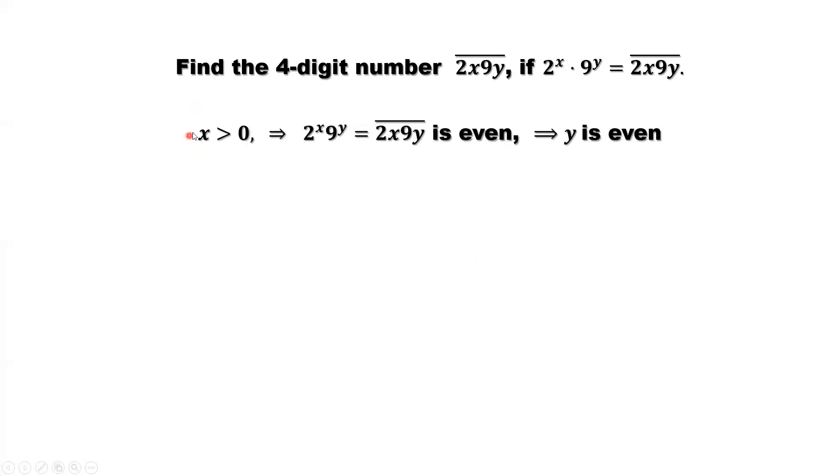From this result, x is bigger than 0. So from the given condition, 2 to the power x times 9 to the power y equals 2x9y. From the left hand side, we can see it is divisible by 2. This is an even number. This implies 2x9y is an even number. The last digit, y, must be even.